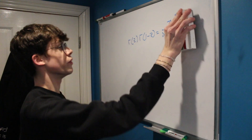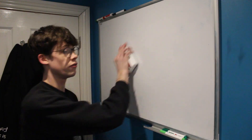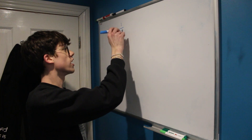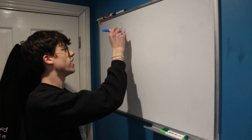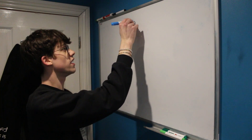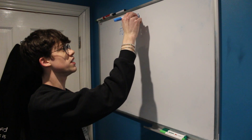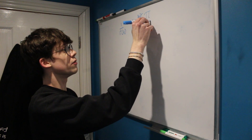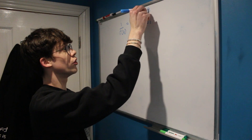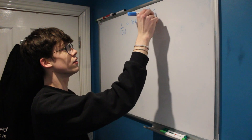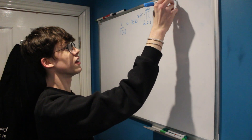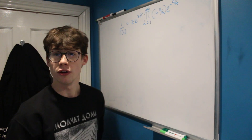Just to recall what we found in the last video: we now know that 1 over gamma of z is equal to z times e to the z times the Euler-Mascheroni constant, times the product from 1 to infinity of 1 plus z over k times e to the negative z over k.